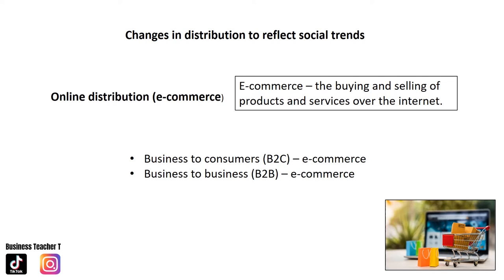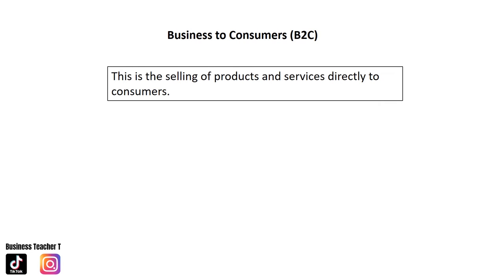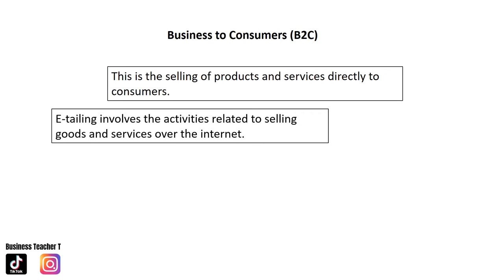There are two types of online distribution: business to consumer (B2C) and business to business (B2B). Business to consumer involves the selling of products and services directly to consumers. E-tailing involves activities related to selling goods and services over the internet — e-tailers do not have physical stores. Examples are Amazon and Alibaba. Most e-tailing involves ordering products online and taking delivery at home or work. Click and collect services are also becoming a popular trend, with customers collecting products in store or at a convenient hub.